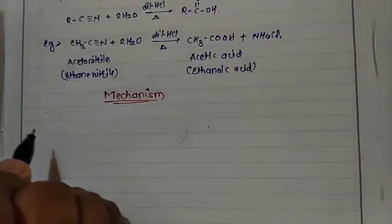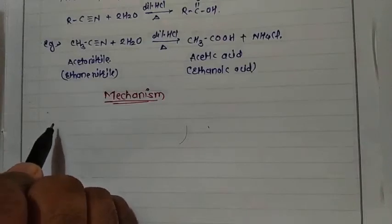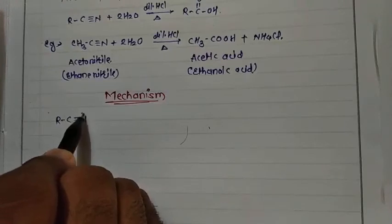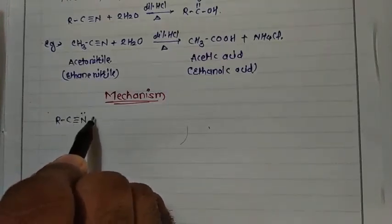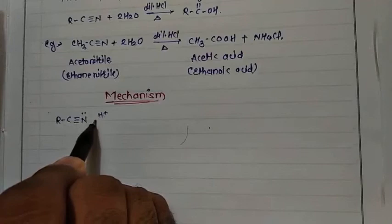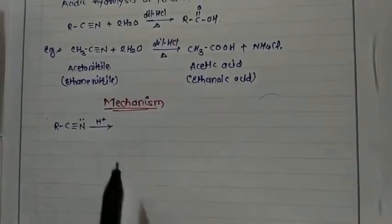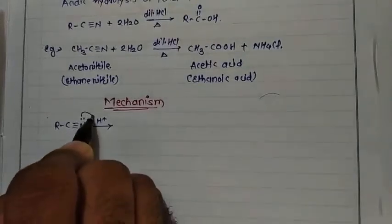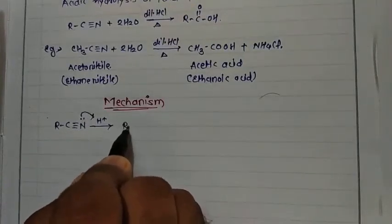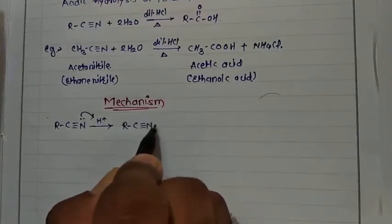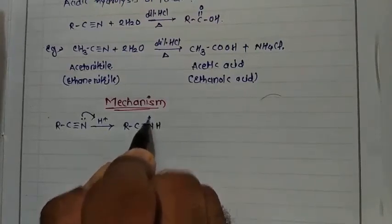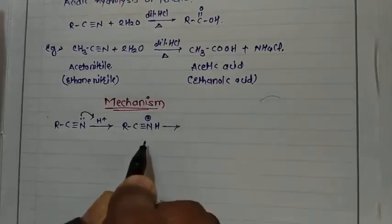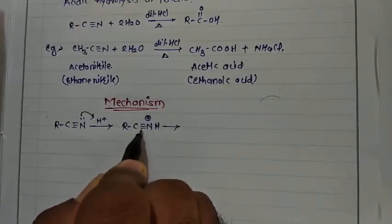In the mechanism, we start with nitrile: R–C≡N. Nitrogen has a lone pair of electrons. The first step is protonation — H⁺ from the acid attacks the nitrogen. So nitrogen shares its lone pair and forms R–C≡N–H, giving nitrogen a positive charge. Then, because nitrogen is positively charged, one pi bond breaks and the electron pair shifts, giving R–C=N with a lone pair and –NH.